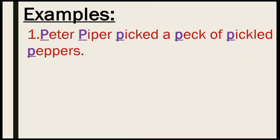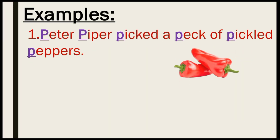Now let's see a different example: 'Peter Piper Picked a Pack of Pickled Peppers.' In this phrase, there is a repetition of the 'P' sound. It is an initial consonant sound that repeats, so this is alliteration.